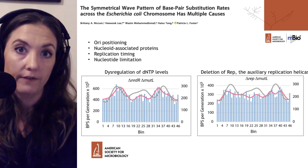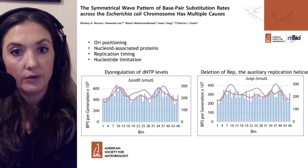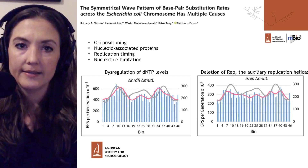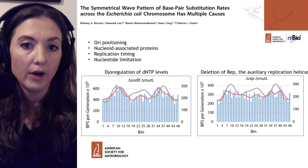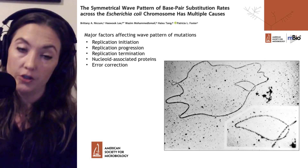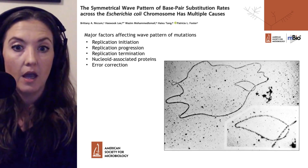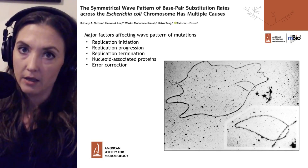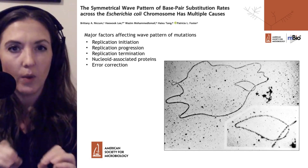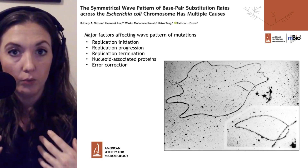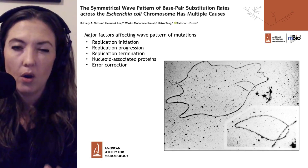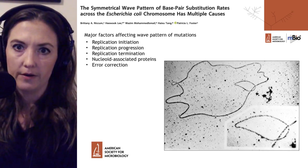They continued with a number of additional mutants using elegant bacterial genetics to determine which DNA-related processes were involved in the wave pattern of mutation. They were able to summarize these as processes involved in replication initiation, replication progression (as shown by the REP mutant), replication termination, nucleoid-associated proteins, and error correction beyond mismatch repair. However, not all processes affected the wave-like pattern — recombination and the SOS response to DNA damage had no effect on either the base pair substitution rate or its pattern.